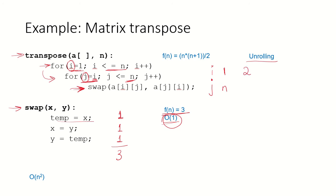If i is 2, j will go from 2 to n, that means swap will be called n minus 1 times. If i becomes 3, j will go from 3 to n and so swap will be called n minus 2 times. And when i becomes n, j will go from n to n, meaning swap will be called just once. Each time swap is called — in the first iteration swap was called n times, and since it is taking order of 1, n into 1 gives us 1. Similarly in the second iteration, swap was called n minus 1 times, each time taking constant time.